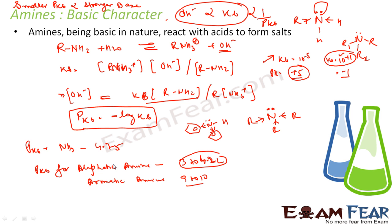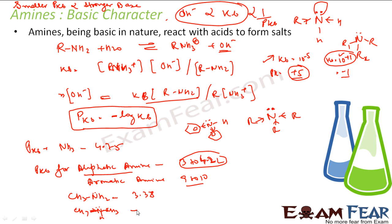Aliphatic amines are stronger bases than ammonia: ammonia has pKb = 4.75, while aliphatic amines have smaller pKb values. For example, methylamine (CH₃NH₂) has pKb = 3.38, and N-methylamine (dimethylamine, with two methyl groups) has pKb = 3.27, which is even smaller because two methyl groups pump more electrons onto the nitrogen.